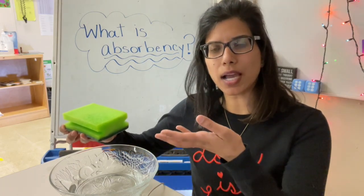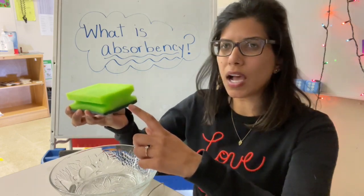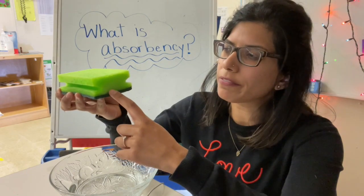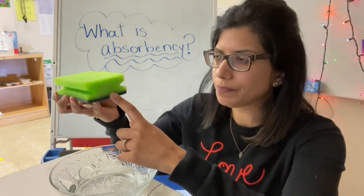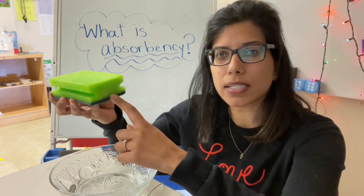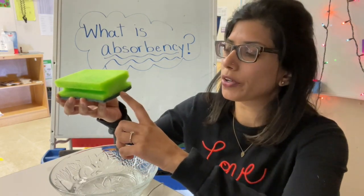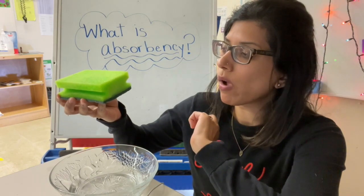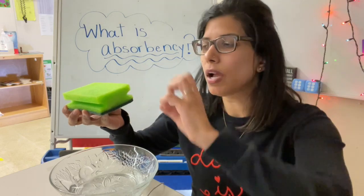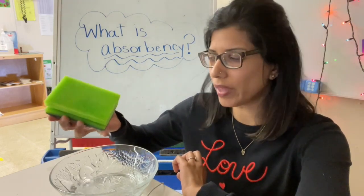What's happened here is absorbency. Water has soaked up into the sponge. There are tiny little air pockets inside the sponge, and they get filled up with water. Once all those air pockets are filled, that's called saturation, and no more water can get in there. So that's what absorbency is — it's the soaking up of water, and a sponge is a great way to show that.